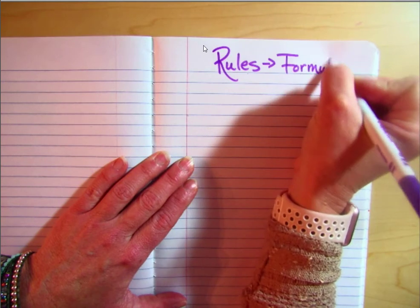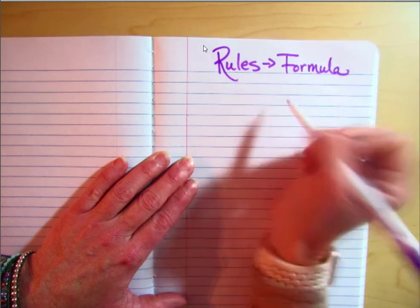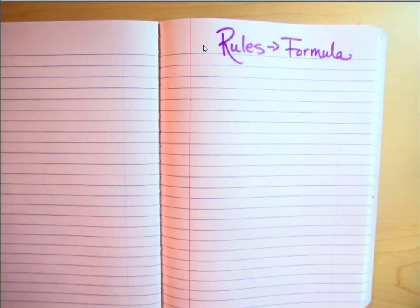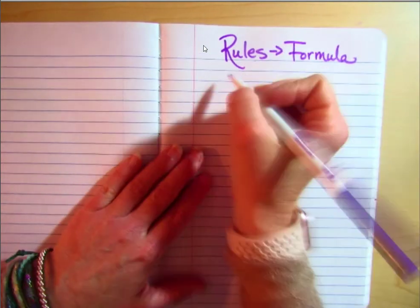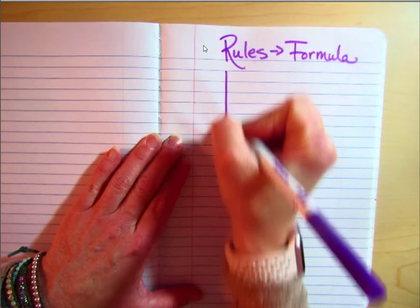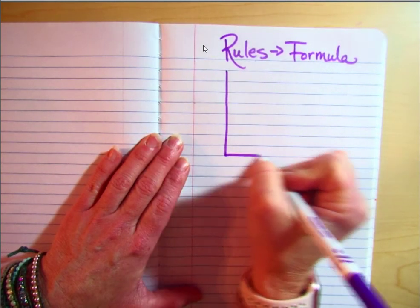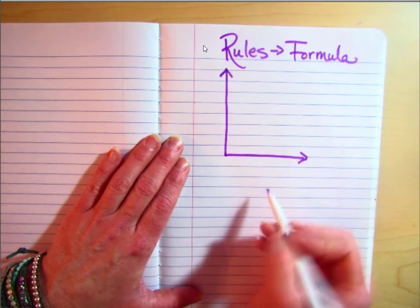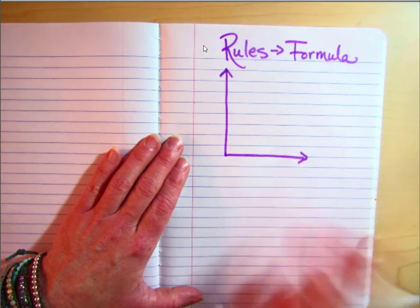Yesterday we talked about using an algebraic equation to show the rule for additive and multiplicative patterns. What you need to remember when we move into this next part is a lot of these are going to give you a graph. There are some things you need to remember about these graphs.